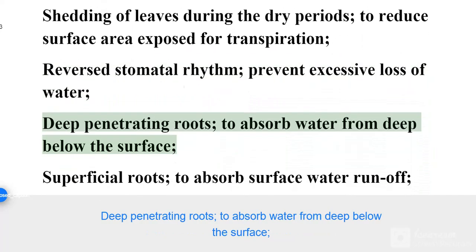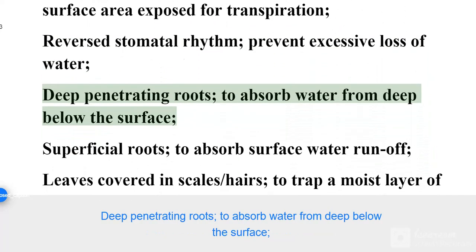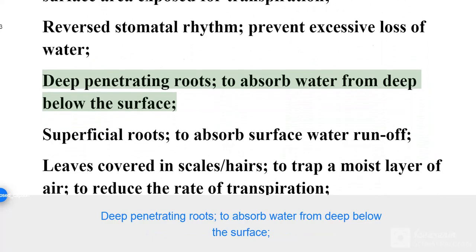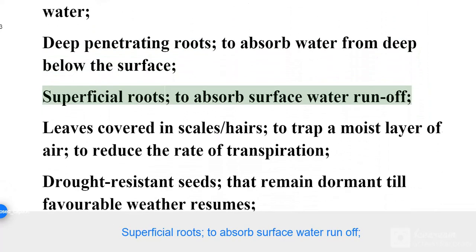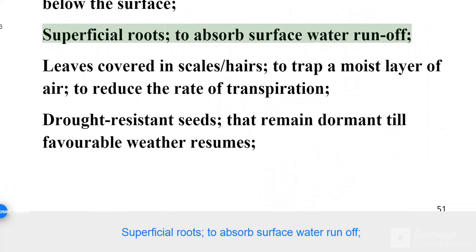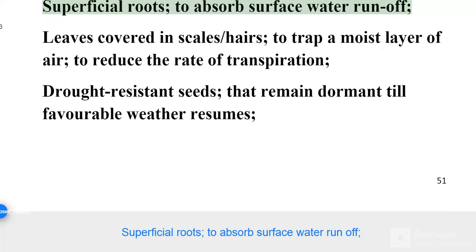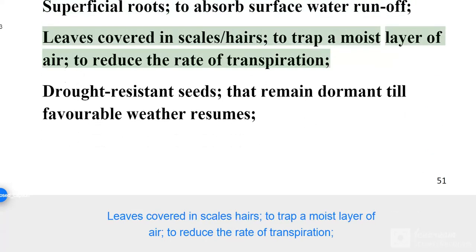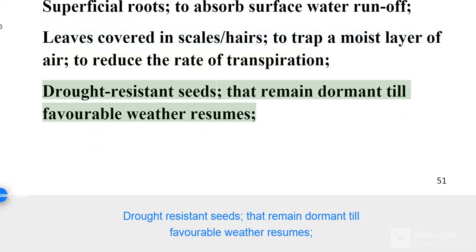Deep penetrating roots to absorb water from deep below the surface. Superficial roots to absorb surface water runoff. Leaves covered in scales or hairs to trap a moist layer of air, to reduce the rate of transpiration. Drought resistant seeds that remain dormant until favorable weather resumes.